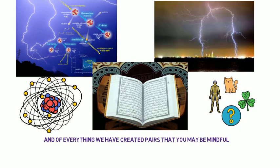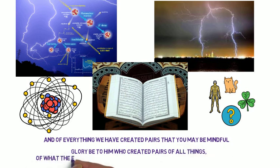Chapter 36, Verse 36: Glory be to Him who created pairs of all things, of what the earth grows, and of their kind and of what they do not know.